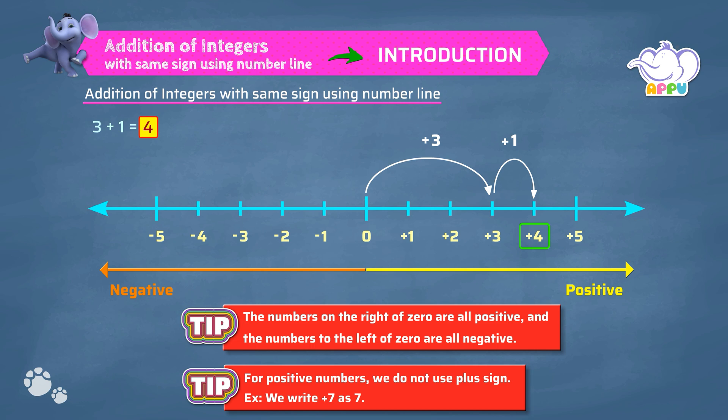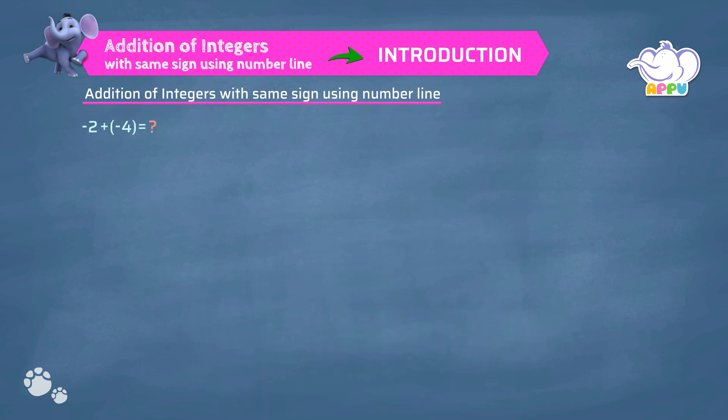Let's look at another example to add integers with both being negative numbers using the number line. Here, minus 2 and minus 4 are negative integers. Let's add them.